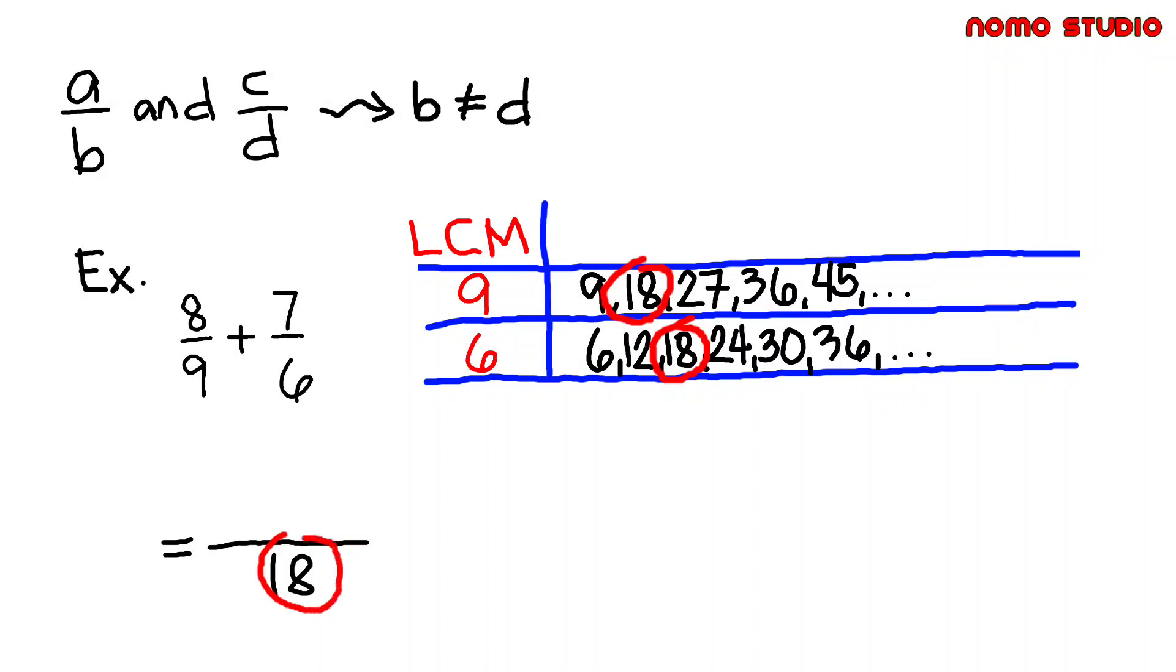18 divided by 9 is equal to 2, then times 8, and that is 16. 18 divided by 6 is equal to 3, then times 7, and that is 21. So now we can add 16 and 21 since they already have the same denominator.